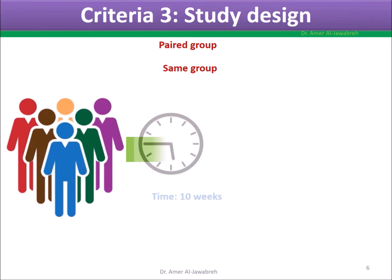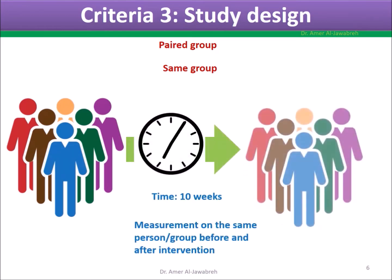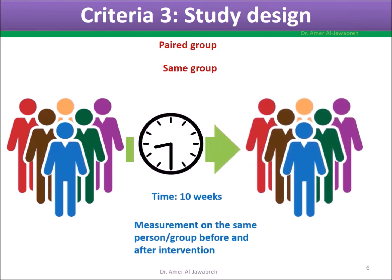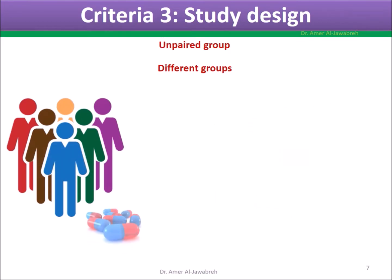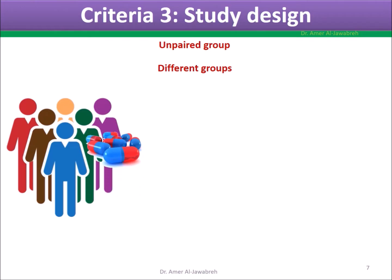Criteria 3: study design. Paired group, where measurement is on the same group before and after intervention. Unpaired group, where measurement is on two different groups.